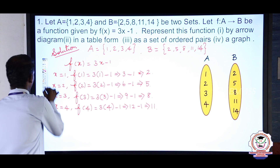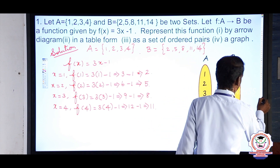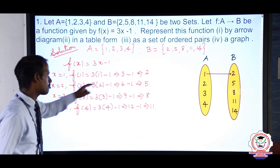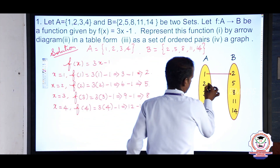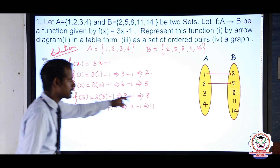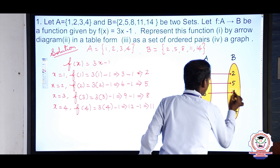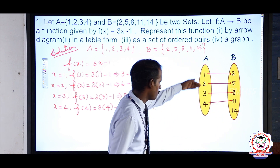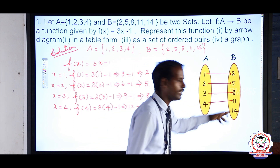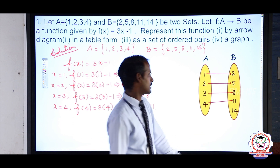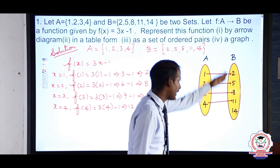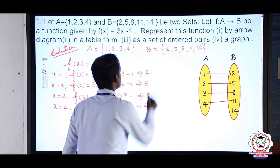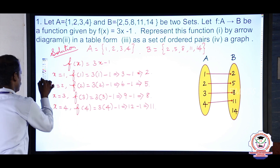In the arrow diagram: 1 relates to 2, 2 relates to 5, 3 relates to 8, 4 relates to 11. Here {1, 2, 3, 4} are the domain and {2, 5, 8, 11, 14} are the co-domain. The range is {2, 5, 8, 11} — the elements in B set that are actually mapped to. The arrow diagram is completed.